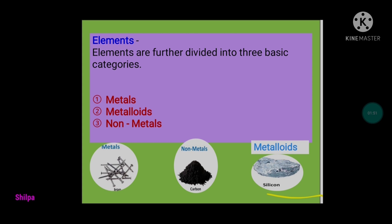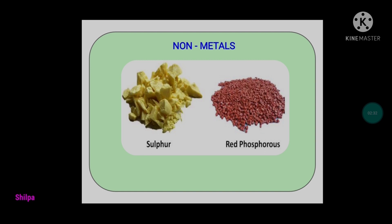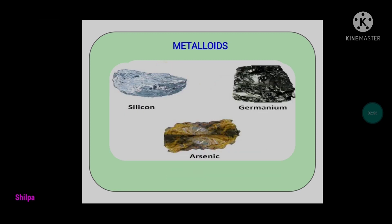Based on their different kinds of properties, these elements are further categorized into three main categories: metals, non-metals, and metalloids. Here we have a few examples of metals — iron. A few examples of non-metals — this is sulfur here, and phosphorus. There are a lot more examples, like carbon. And an example of metalloids: silicon, germanium, arsenic.